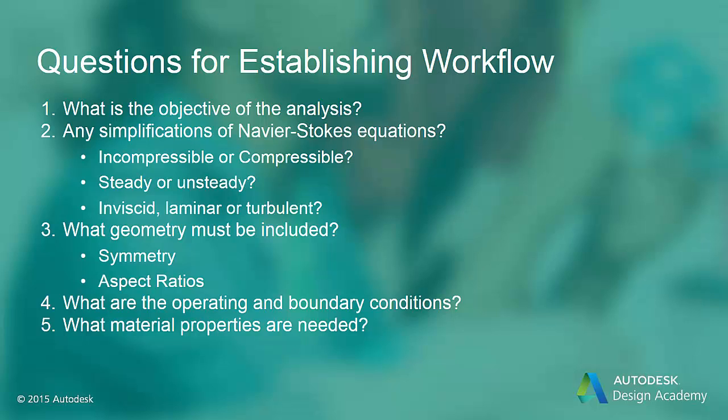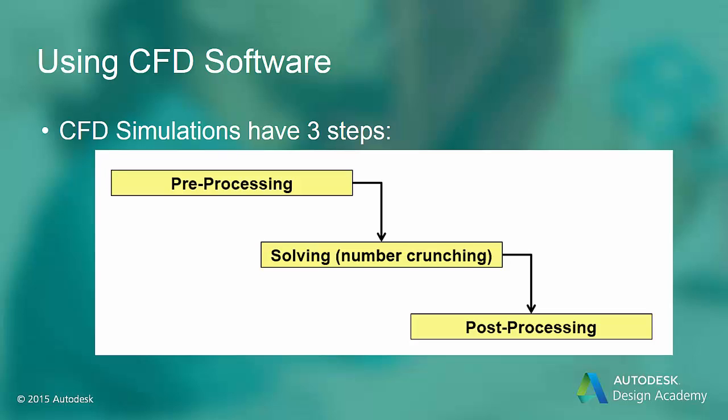Before beginning a CFD analysis, you should understand the nature of the simulation and the goals for performing the analysis. By answering these questions, the CFD simulation can most efficiently produce results that can be used in the design process. A CFD analysis consists of three main steps. The pre-processing step sets up the problem geometry for the CFD solver, where we assign material properties and boundary conditions and discretize or mesh the geometry to create the nodes on which the CFD solution will be calculated.